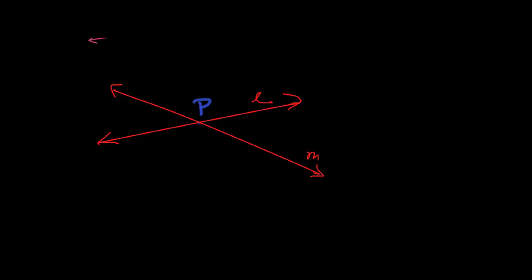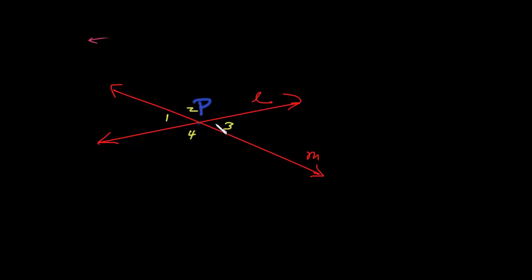I think we all would recognize that immediately with these points of intersection, four angles have been formed at that point of intersection. These angles are angle 1, angle 2, angle 3, and angle 4. So lines L and M intersect at point P, and four angles are formed at that point of intersection.